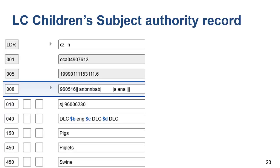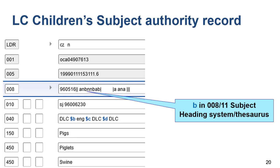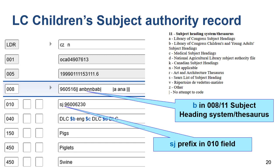LC Children's Subject Headings are simplified subject headings established and assigned by LC's Children's Literature Cataloging section. These may be used primarily in public or school libraries, or in curriculum libraries and academic institutions. It's important to identify these so they are not inadvertently used instead of a Library of Congress subject heading in your cataloging. For example, the 150 authorized form Pigs in this LC Children's heading is simplified from the scientific name Swine, which is a C reference or 450 in this record. You can identify children's subject authority records because the fixed field element subject — 008-11 — will be coded B for children's, and there will be the SJ prefix in the 010 LCCN field.